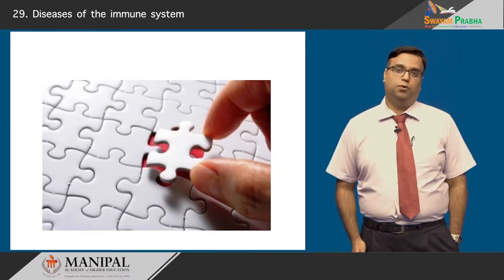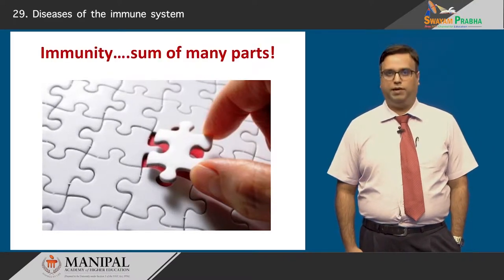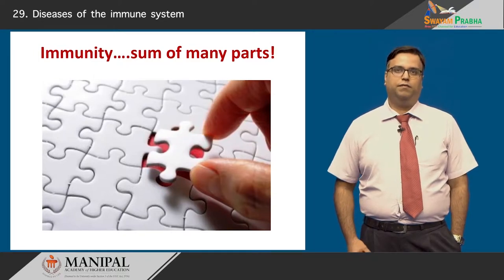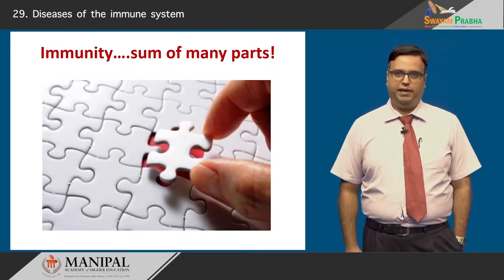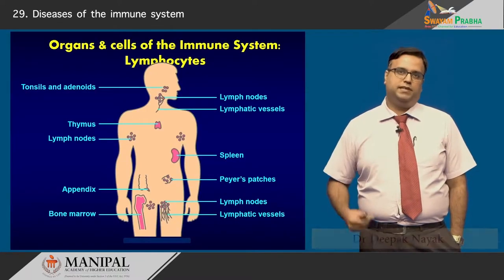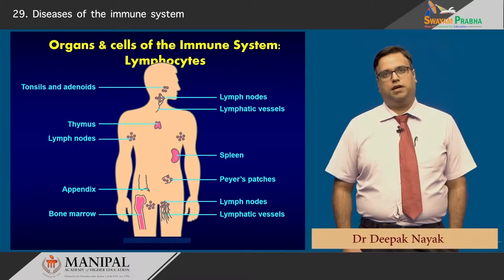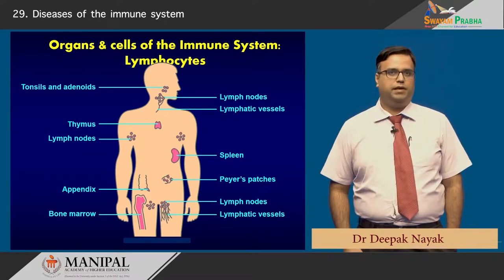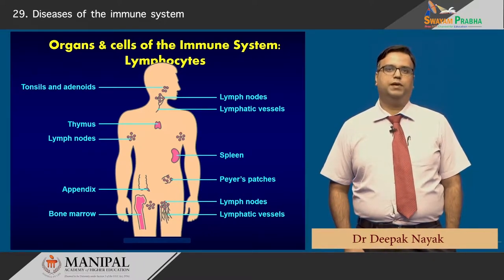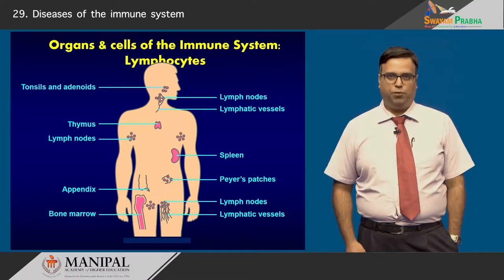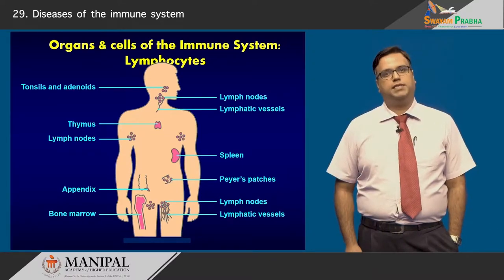The immune system is not a whole; it is actually a sum of many parts — like a grid where each puzzle piece has a role to play to make the final picture. The organs involved in the immune system range anywhere between the lymph nodes, the spleen, the liver, and the bone marrow.